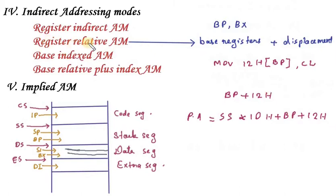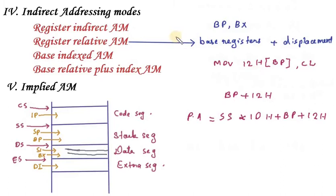So this is Register Relative Addressing Mode. In this mode we have a base register plus a displacement value — a constant such as 4H or 12H. The combination of base register and displacement gives the effective address.